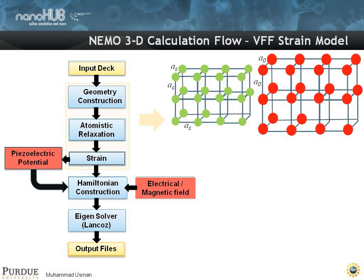Here's the VFF calculation. Why would you do that? Gallium arsenide and indium arsenide have very different lattice constants — in fact, that's why these quantum dots self-assemble, because they have very different lattice constants.